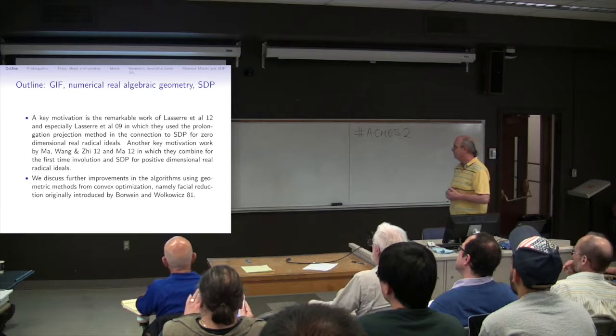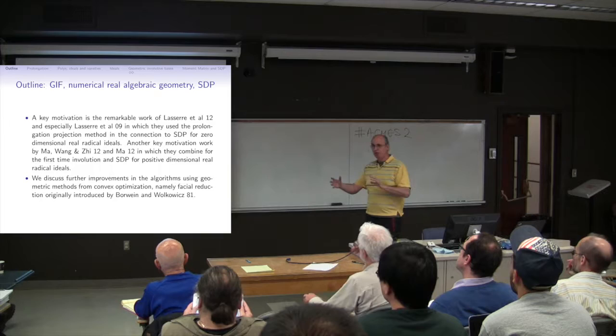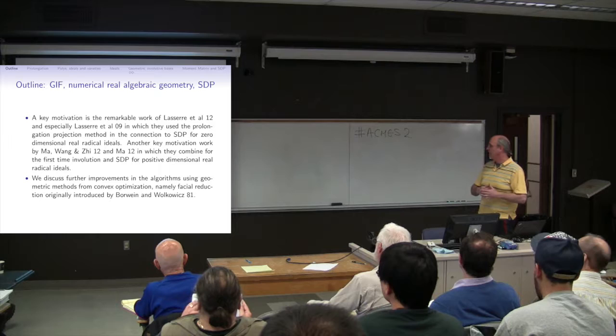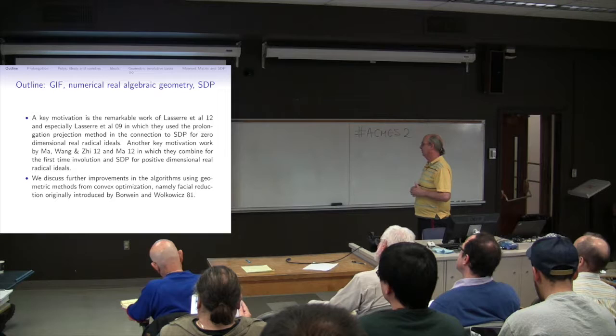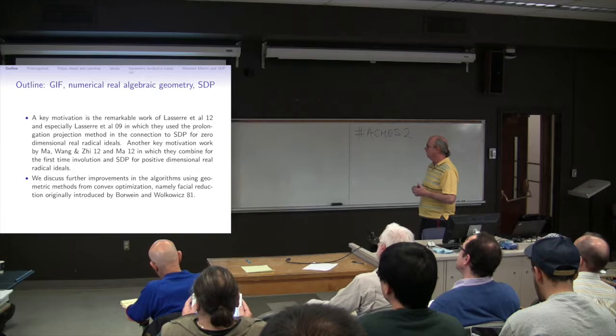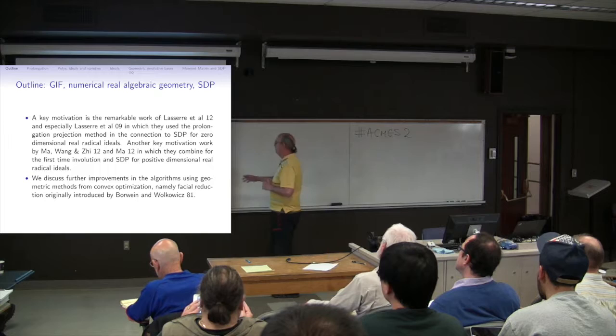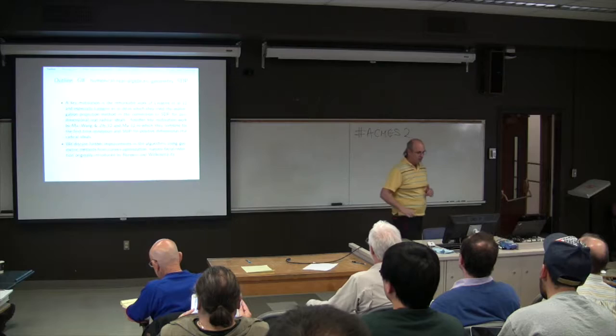And there's been some remarkable work by Lasserre and collaborators in which they established this remarkable connection between convex optimization and real algebraic geometry for zero-dimensional real radical ideals. And there's been some other related extremely good work by Mao, Wang and Xi. And we're going to, in this part of the talk, discuss some further improvements in those methods. So there's going to be methods based on facial reduction for that if we get that far.